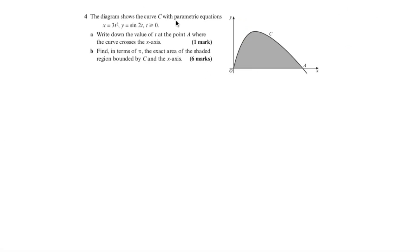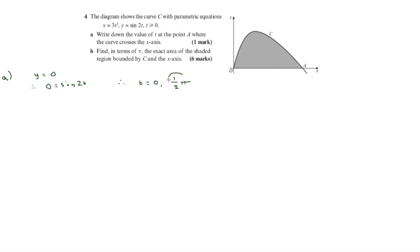The final question has a curve with parametric equations x equals 3t squared and y equals sin(2t). Part (a) asks for the value of t at point A where the curve crosses the x-axis. Setting y equal to 0 gives sin(2t) equals 0, so t equals 0 or t equals pi over 2. Since t equals 0 is the origin, point A corresponds to t equals pi over 2.